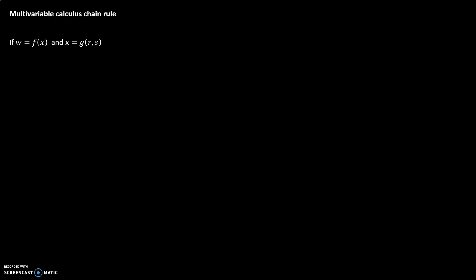Here's an example of a strange case that leads to a nice shortcut. We're looking at a dependent variable w that depends on a function f with an independent variable x, but x depends on two variables r and s. This is an interesting case — if we try to make our diagram, we have our independent variables, our intermediate variable, and our dependent variable.